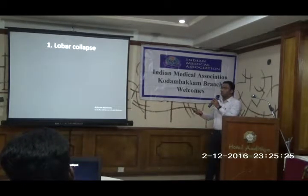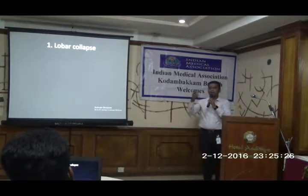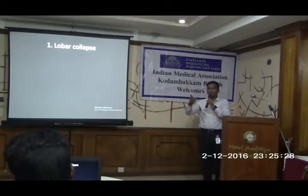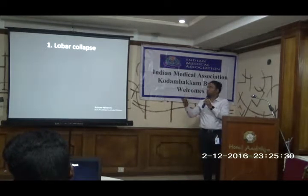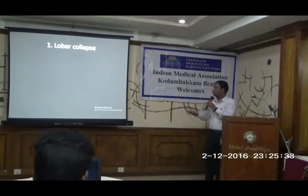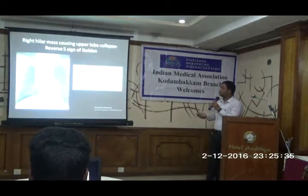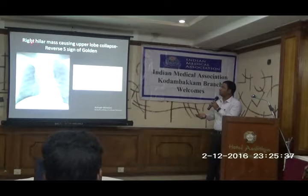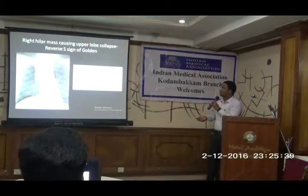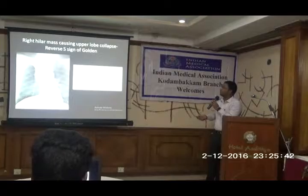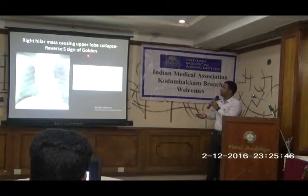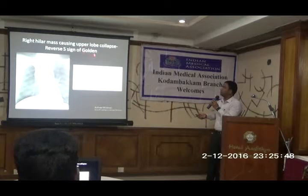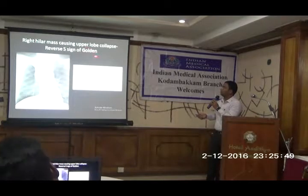First we will identify the lobar collapse — the right upper lobe, right middle lobe collapse, lower lobe collapse, left upper lobe, and left lower lobe collapse. The sign for right upper lobe collapse: there will be a mass, a high-level mass. It is called the Golden S sign, or otherwise called the reverse S sign of Golden.